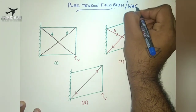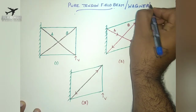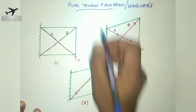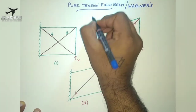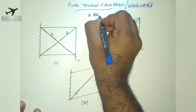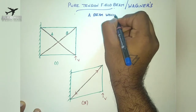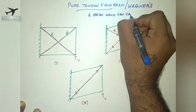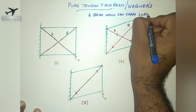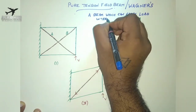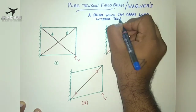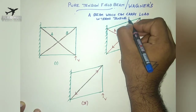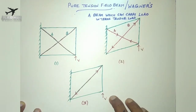What do you mean by pure tension field beam? It is mainly any beam structure which can carry load in terms of tensile load. This is the main definition of a pure tension field beam. The main application of a pure tension field beam came for spar applications in airframe structures.